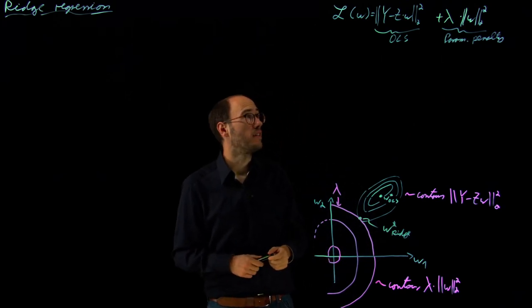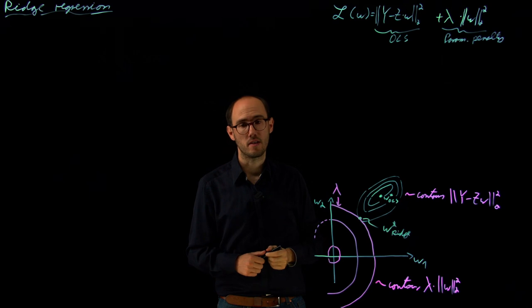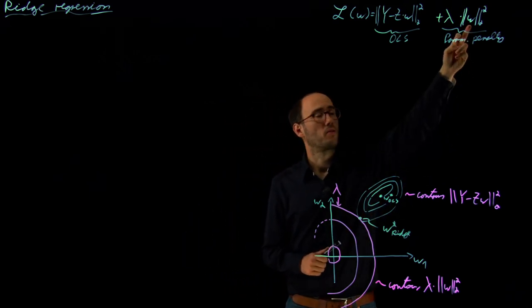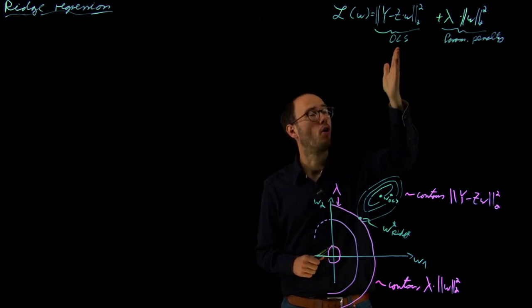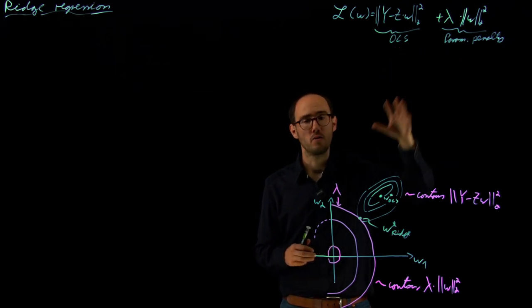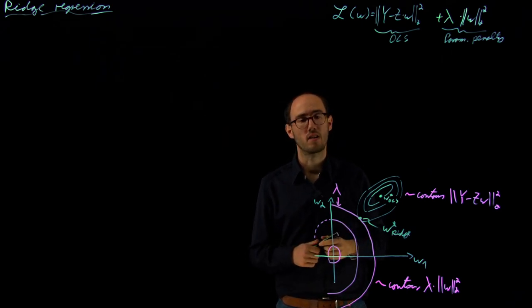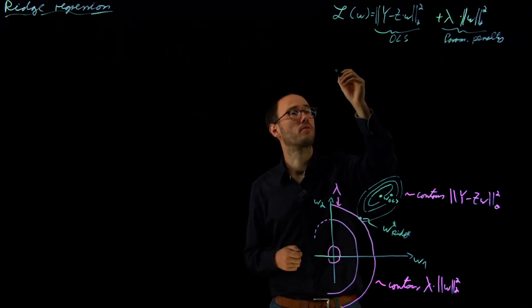Interestingly, this cost function will also lead to a closed form solution. Why? Because this quadratic loss on w is also just an additional quadratic term to our already quadratic ordinary least squares loss function. So using the same derivation approach we can actually solve for the closed form solution. We calculate the gradient of this new loss function, set it to a zero vector, and then solve for w.